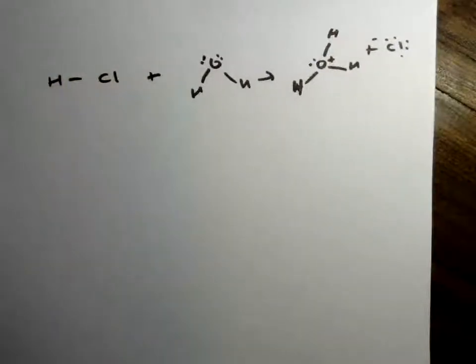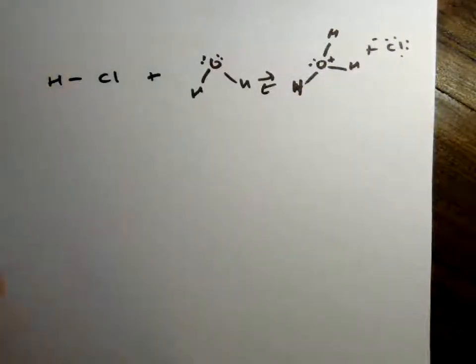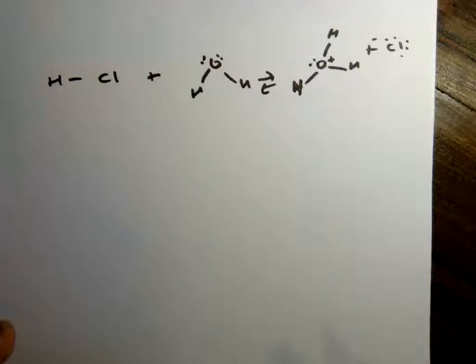Okay, so how can we tell, you know, this isn't really just a forward reaction, it's really an equilibrium. So how can we tell which is favored in this reaction?